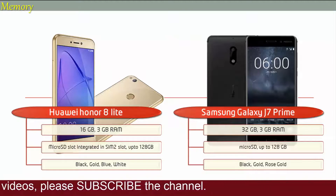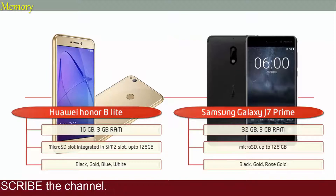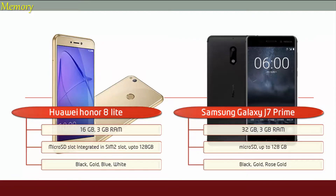Moving on to Nokia 6, it is available in 32GB of internal storage with 3GB RAM and also supports microSD up to 128GB. Nokia has launched this device in different colors: art black, matte black, tempered blue, silver and copper.